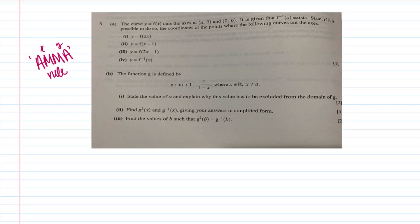Let's go into Part A. The curve y = f(x) cuts the axes at (a, 0) and (0, b). It is given that f-inverse exists. We need to state, if possible, the coordinates of the points where the following curves cut the axes — so only when x = 0 or y = 0.